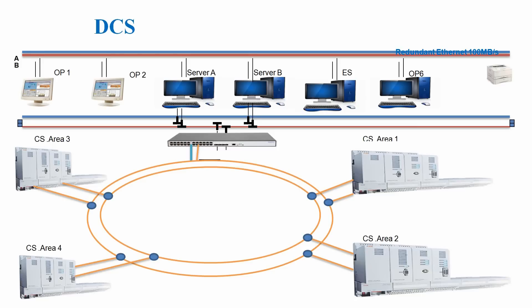All controllers are connected on a fiber ring. You can see there are two cables — one for main and one for redundant. These are all connected to the switch, and then the switch is connected to that particular LAN.